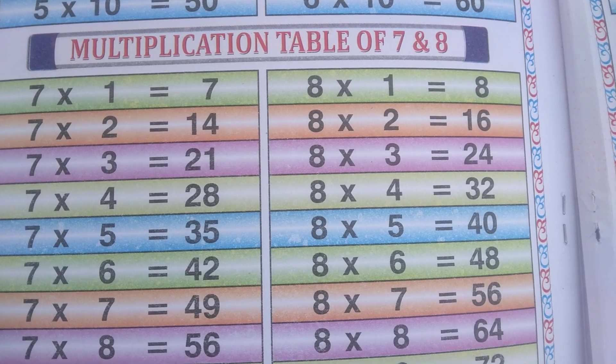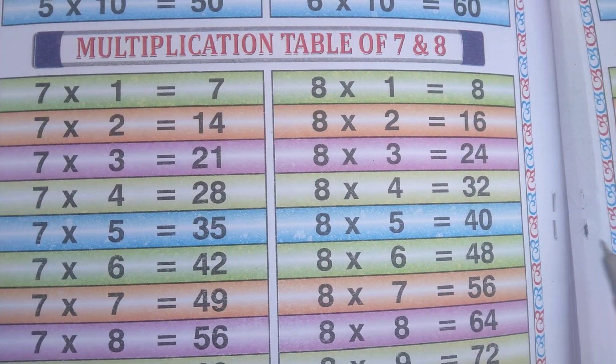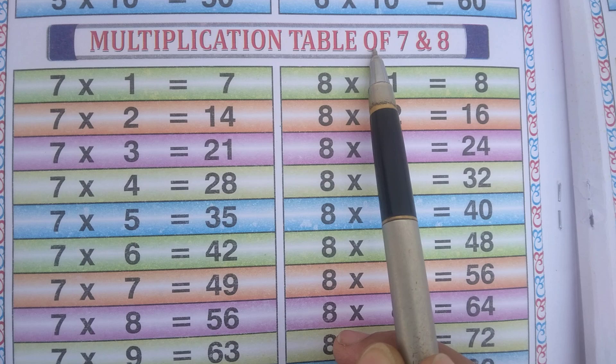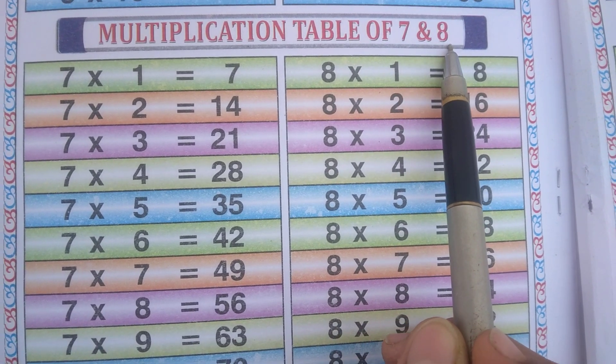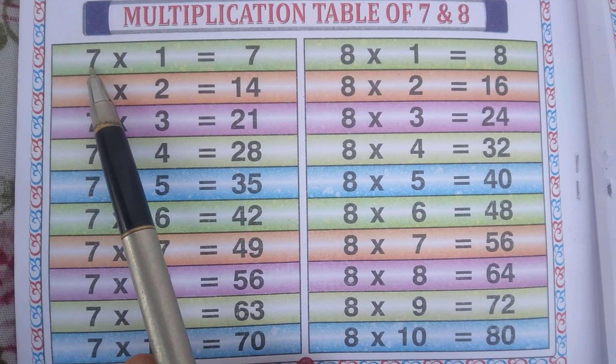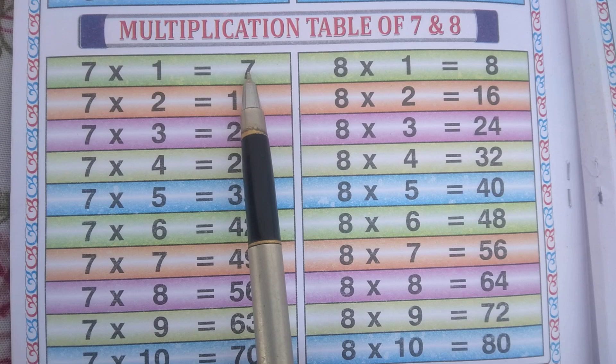Hello Friends, Today we are going to learn Multiplication Table of 7 and 8. 7 1s are 7,